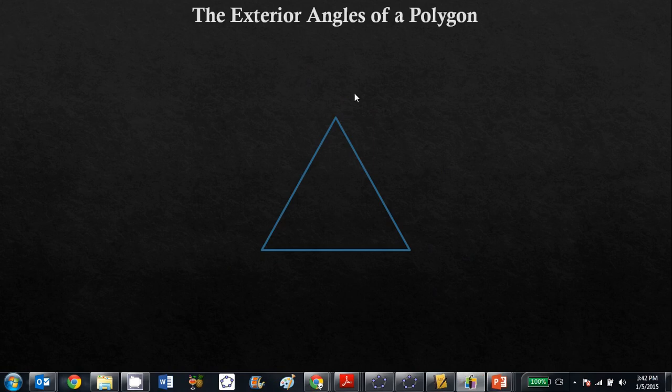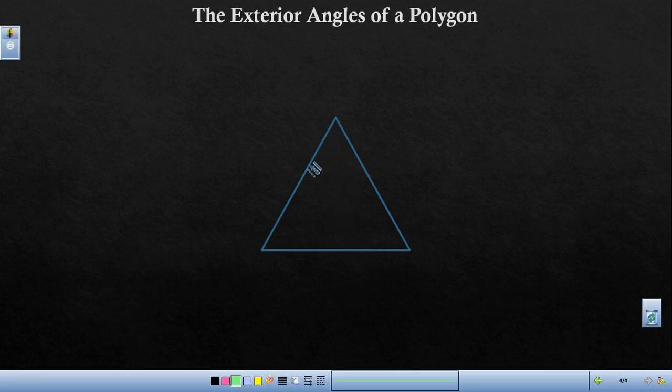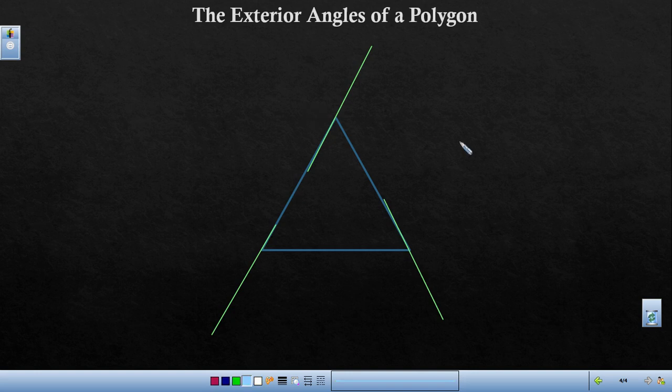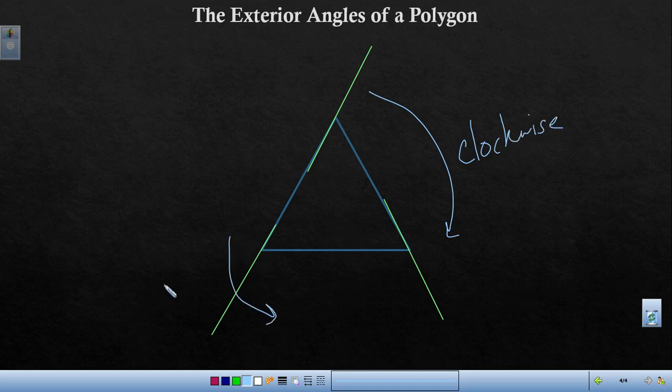You want to be careful not to do something like this where you extend this way and then you extend this way and then suddenly you do something crazy and you extend this way. These two are wound clockwise, but this one is actually wound counterclockwise. And that's not going to work. So you can't wind them in opposite directions. Don't do it.